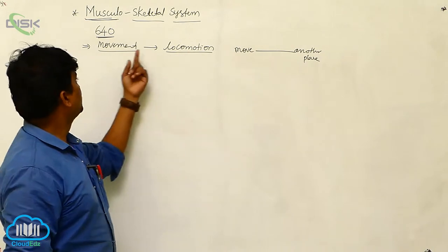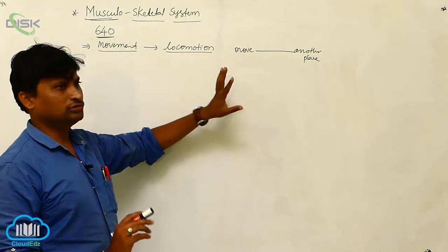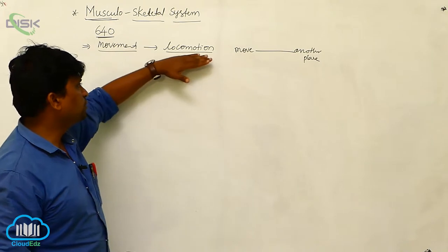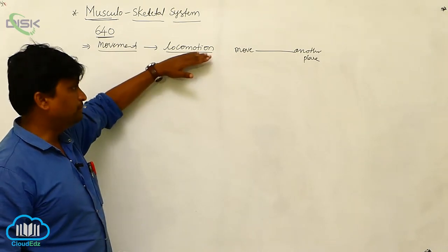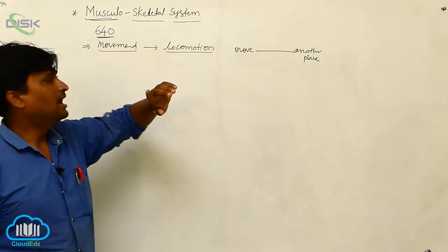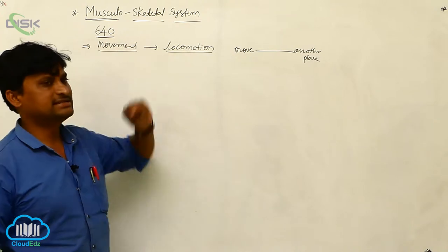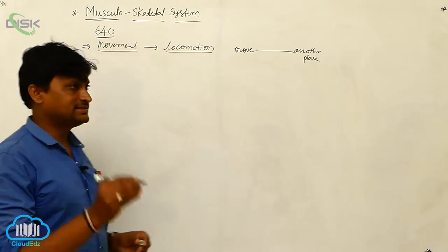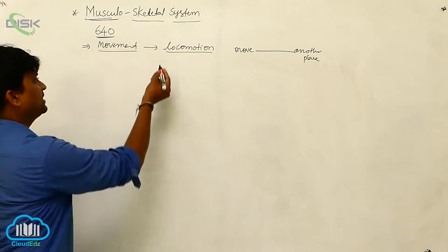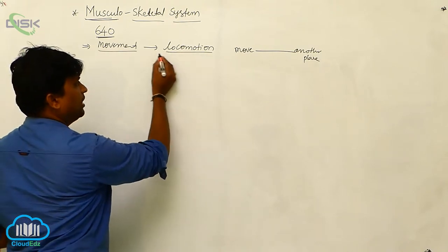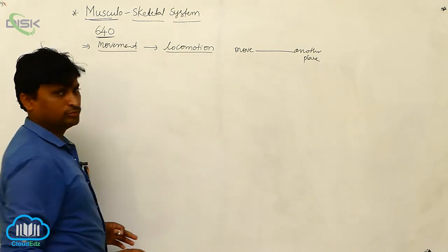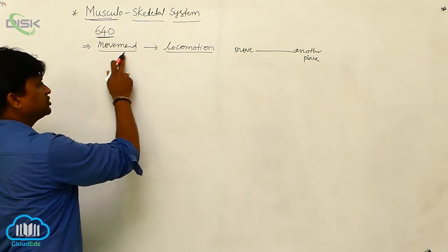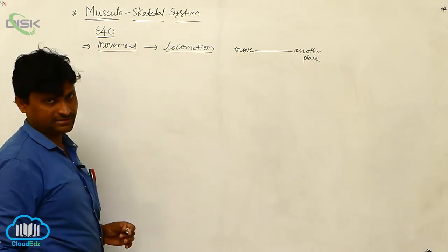Movement and locomotion are related — without movement, there can be no locomotion. But not all movements should be considered as locomotion. The key point is: all locomotions are considered as movements, but all movements should not be considered as locomotion.